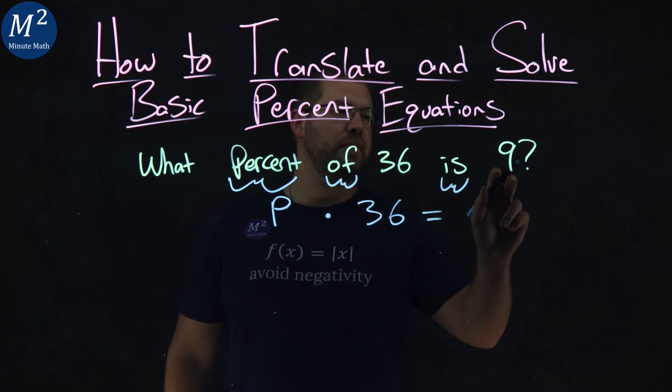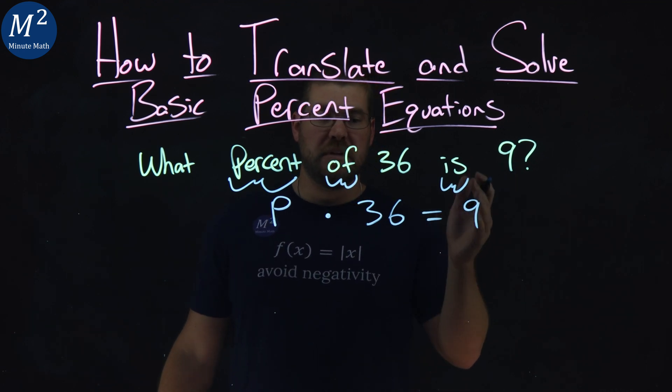This just comes down. Is. Is an equal sign, and then 9 is right here.